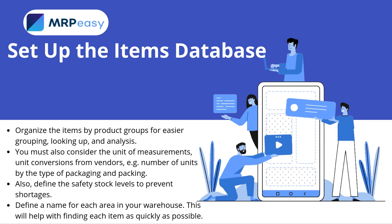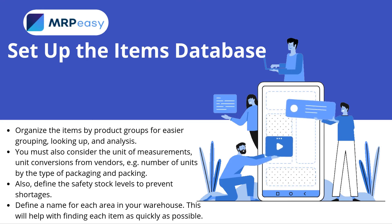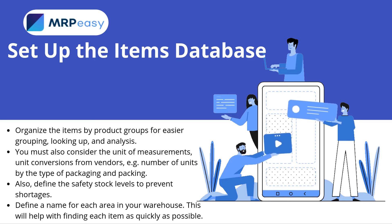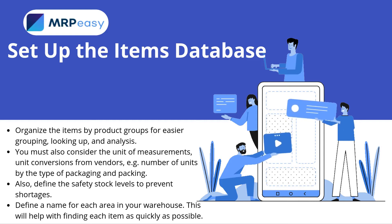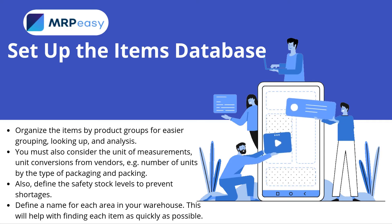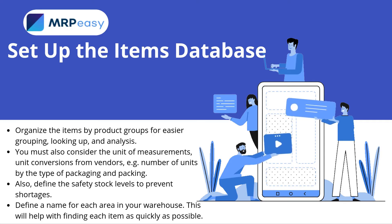You must also consider the unit of measurements and unit conversions from vendors — for example, number of units by type of packaging and packing. Define the safety stock levels to prevent shortages. Define a name for each area in your warehouse; this will help with finding each item as quickly as possible.